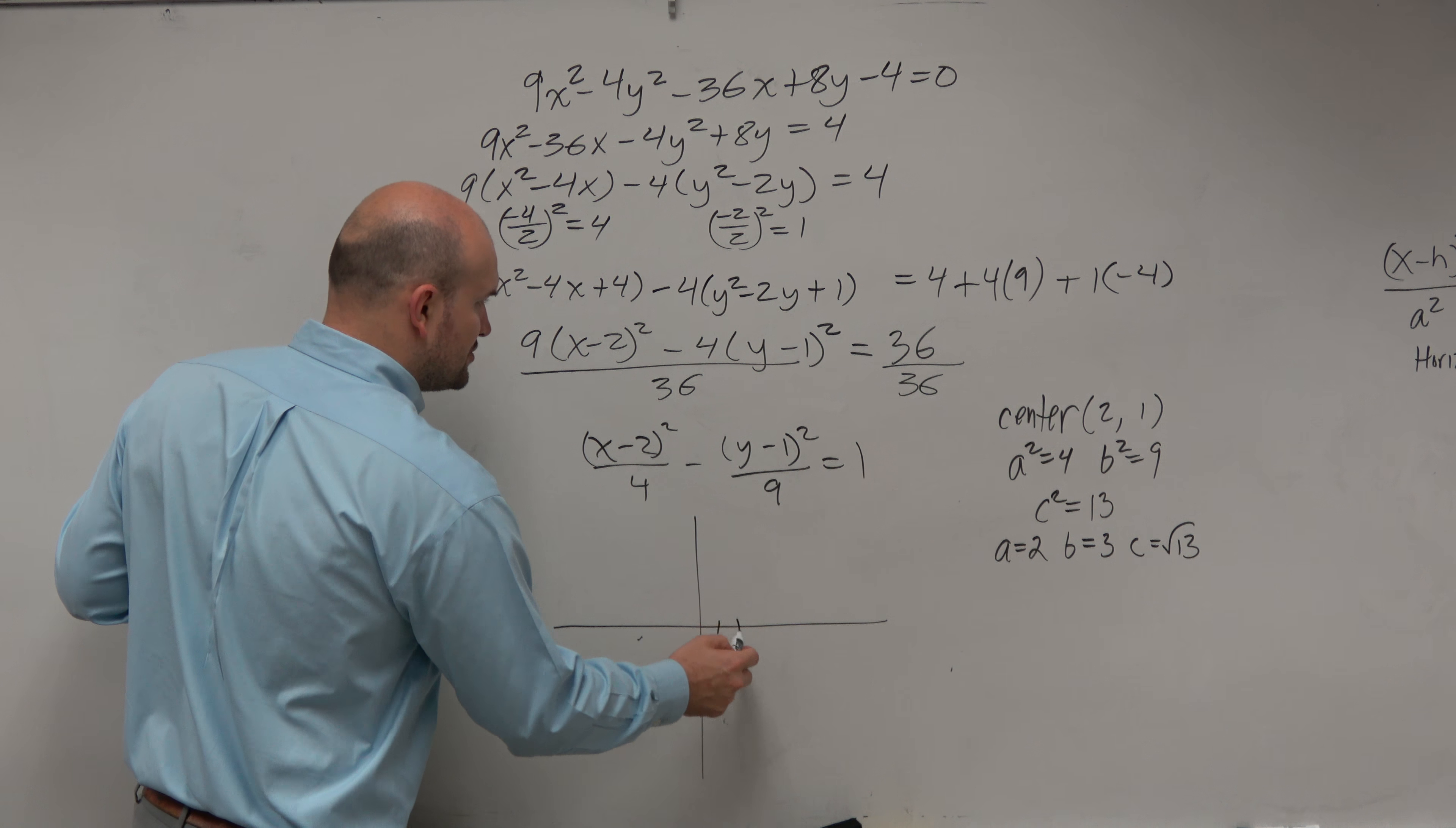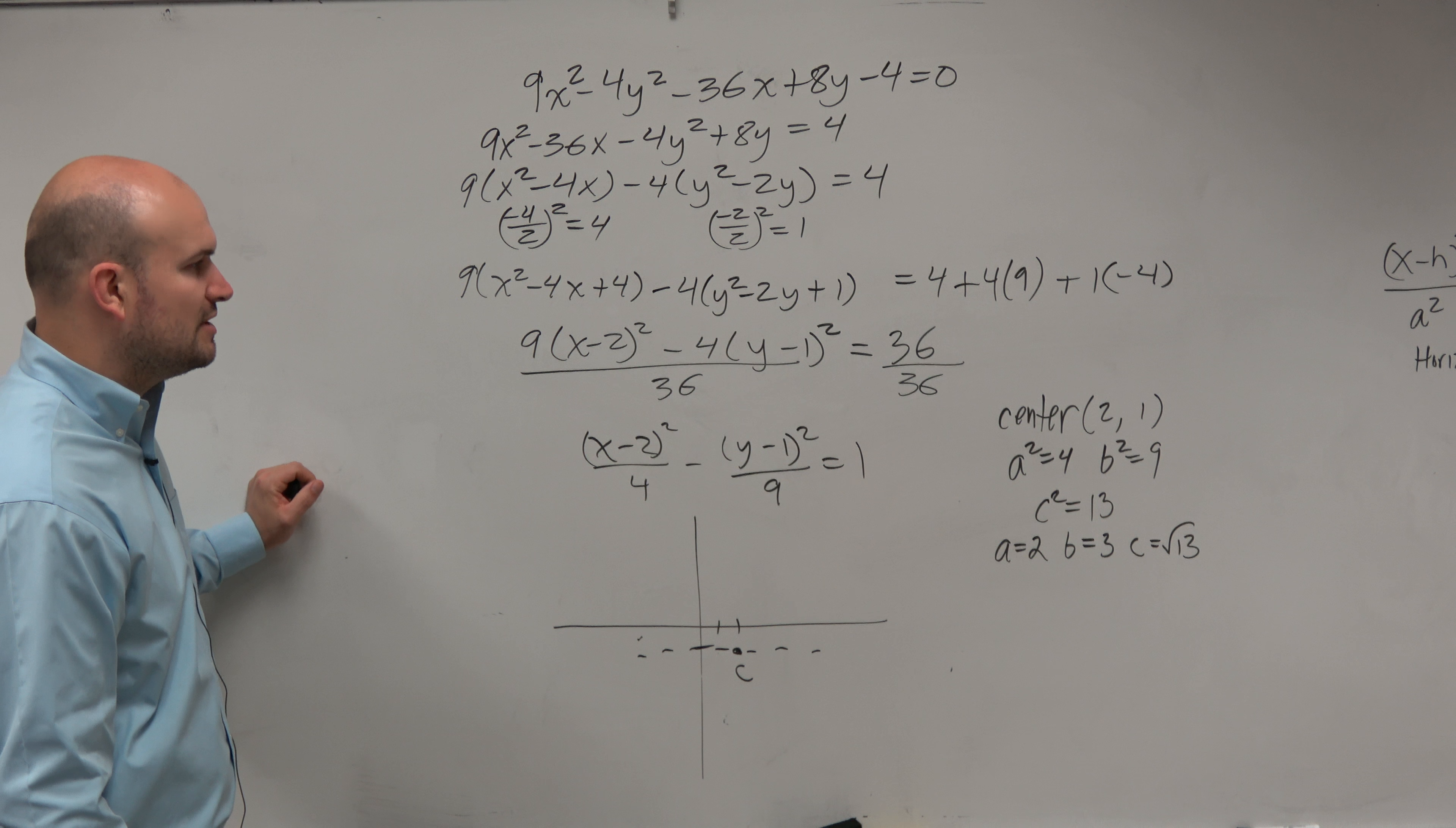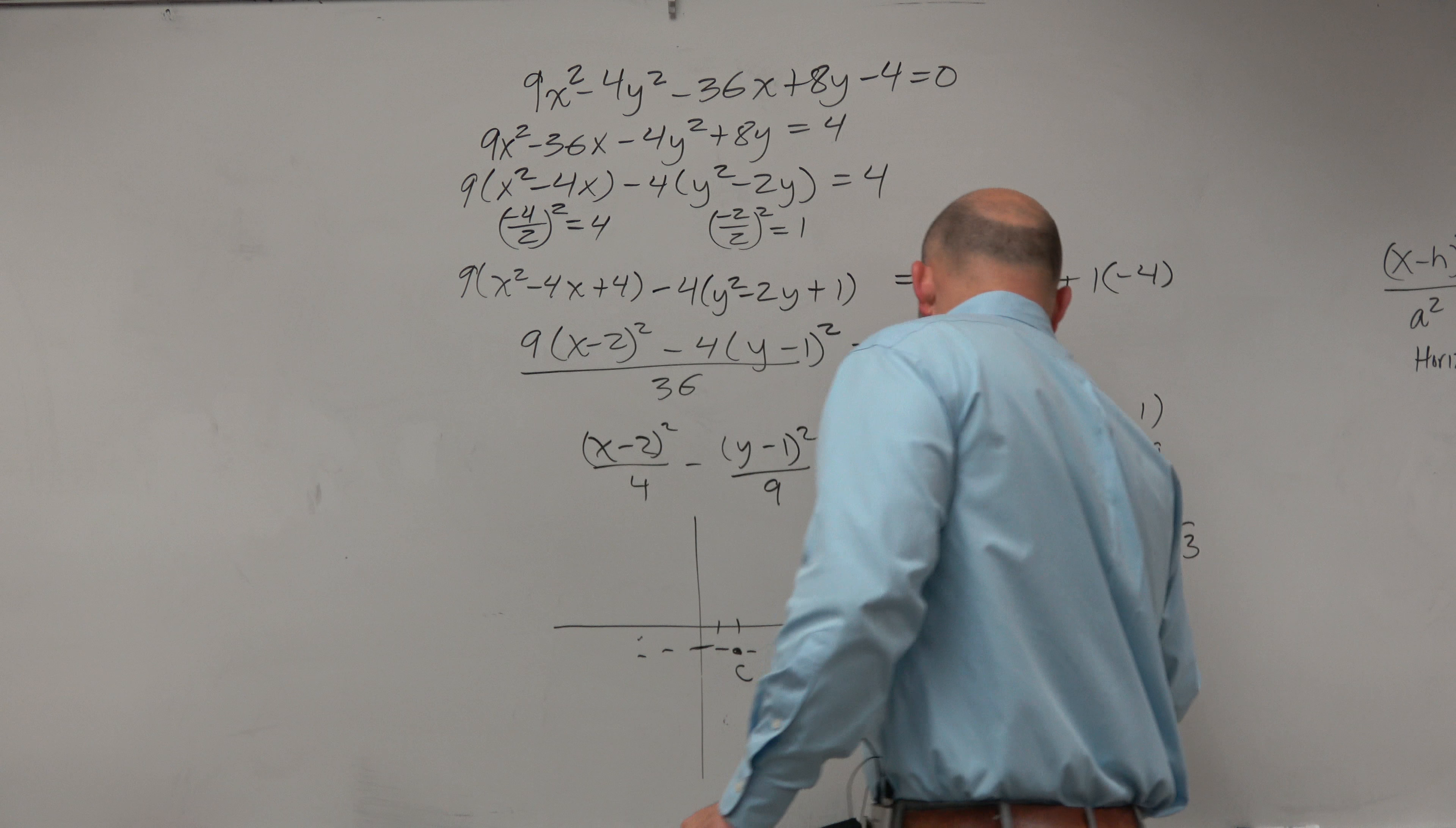Let's see. c squared is going to be a squared plus b squared equals c squared. So that's going to be 13. So that means a is 2, b is 3, c is square root of 13.